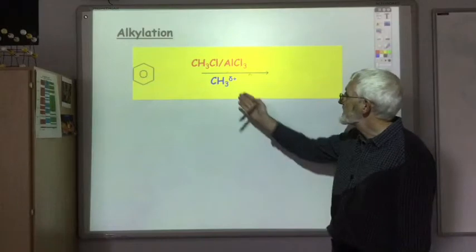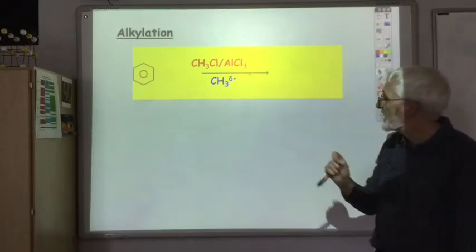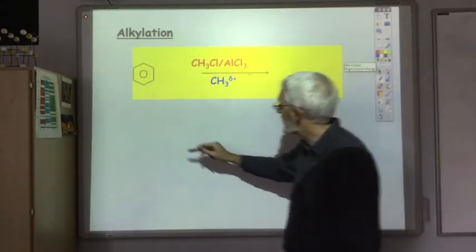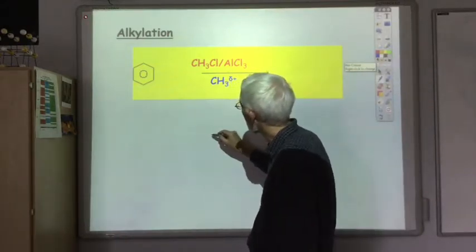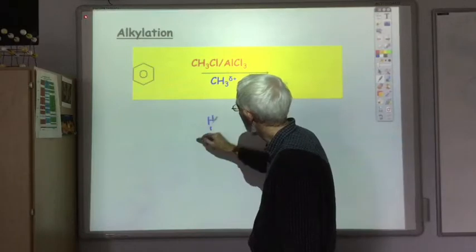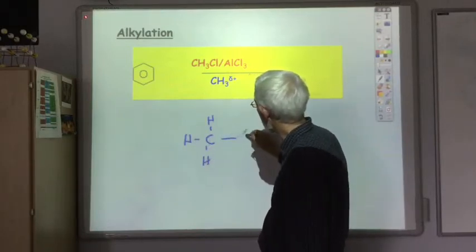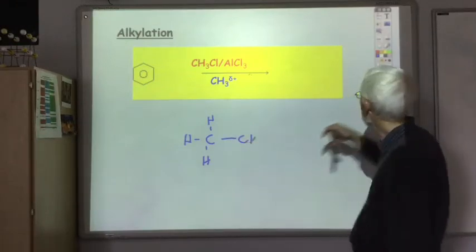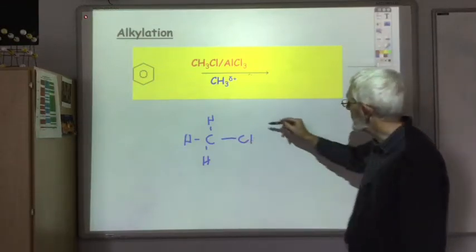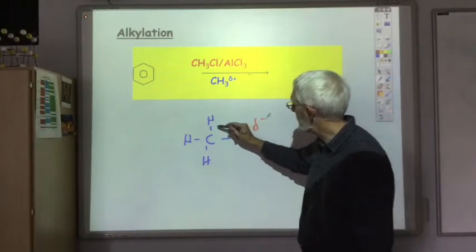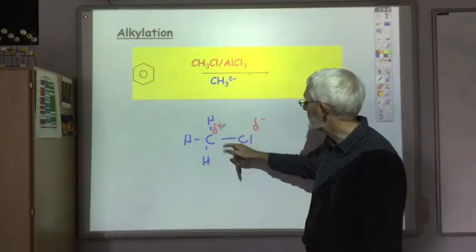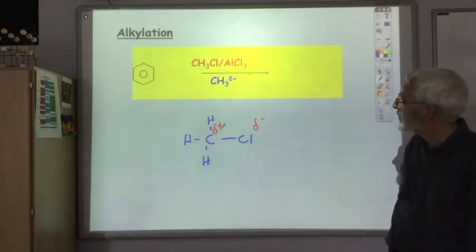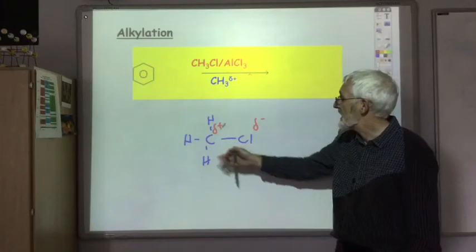The electrophile, in this case, is slightly positive CH3. The C-Cl bond is polar, with the chlorine having a higher electronegativity. So there's always going to be a slightly positive charge on that carbon atom of the alkyl group, and that's what acts as the electrophile.